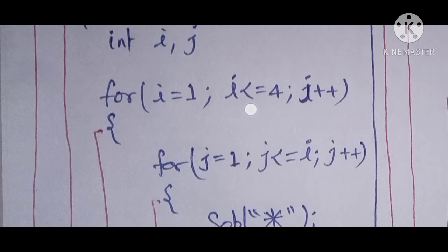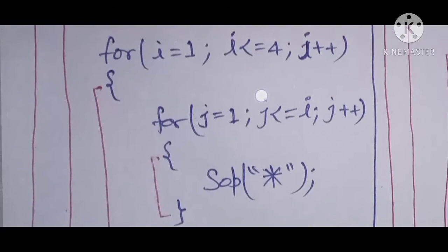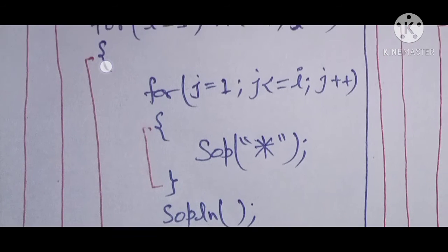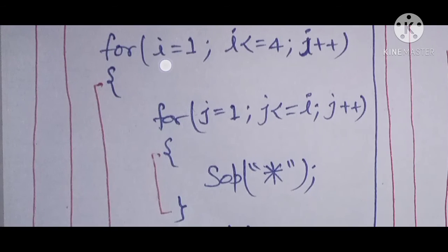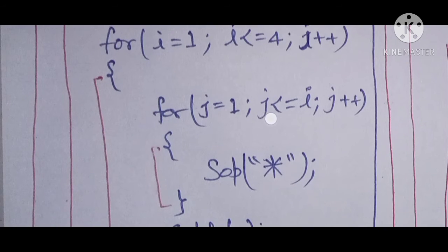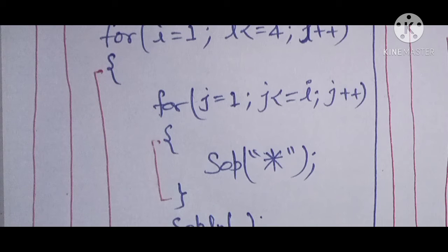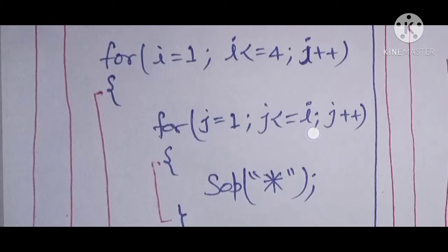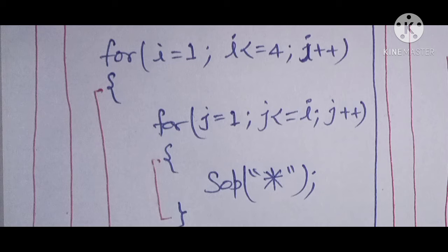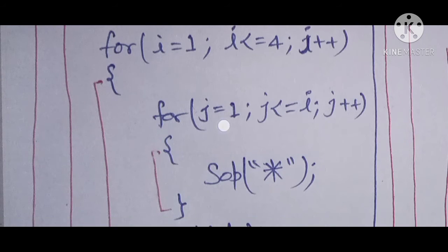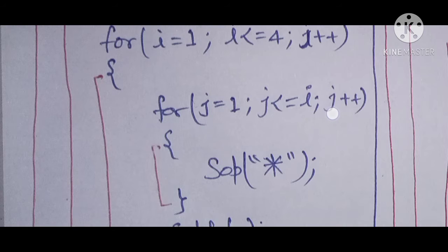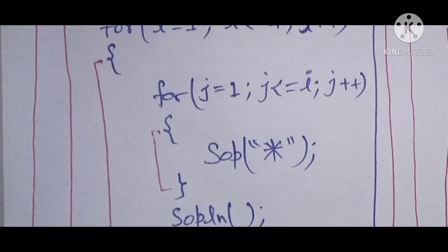Inside each of the 4 lines, we perform the printing operation using an inner loop. The inner loop runs `j = 1` while `j <= i`, `j++`. This means if `i = 1`, the inner loop prints 1 time; if `i = 2`, it prints 2 times — whatever the value of `i`, that many stars are printed.